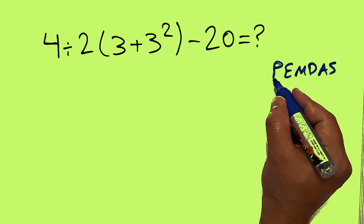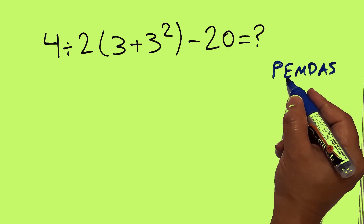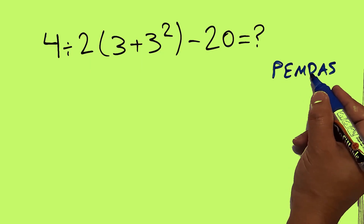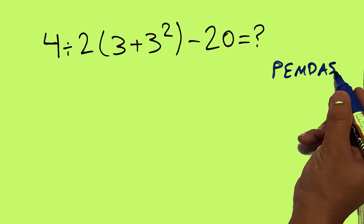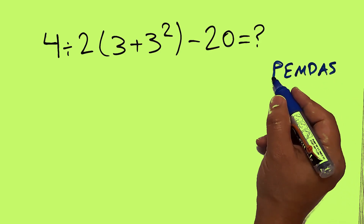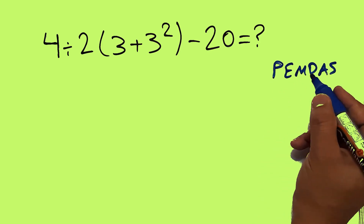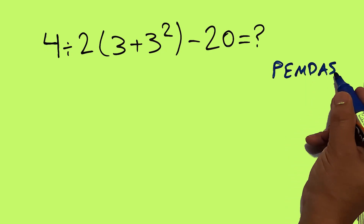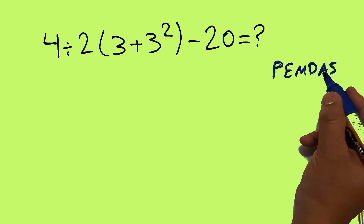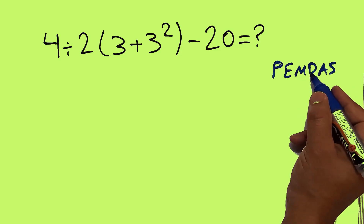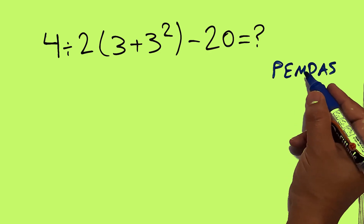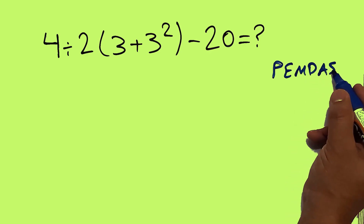P stands for parentheses, E stands for exponents, M and D stands for multiplication and division, and A and S stands for addition and subtraction. We first do parentheses, then exponents, then multiplication and division, and finally addition and subtraction. Remember that multiplication and division have equal priority, and we work from left to right. And the same applies to addition and subtraction.